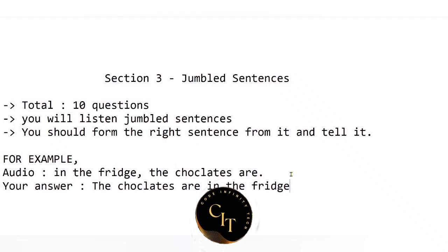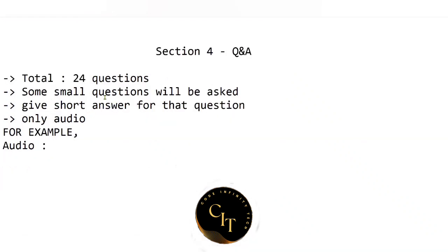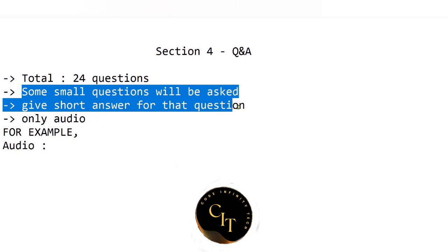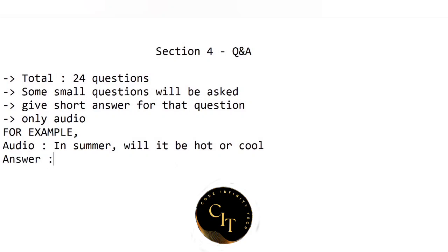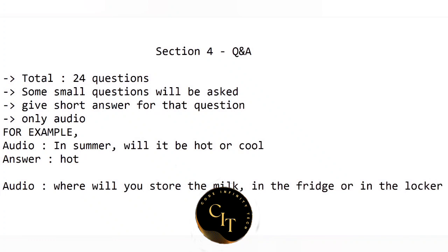The next section is Q&A, with around 24 questions. You will be asked a question and need to give a short answer — one word or two words. Again, only audio questions, no text displayed on screen. For example, if asked 'in summer will it be hot or cool?', your answer should be 'hot'. Or if the audio asks 'where will you store the milk — in the fridge or in the locker?', your answer will be 'in the fridge'. General questions will be asked and this will also be a simple round.